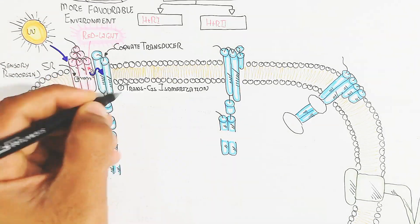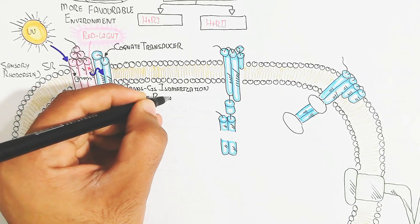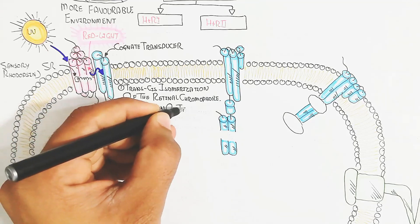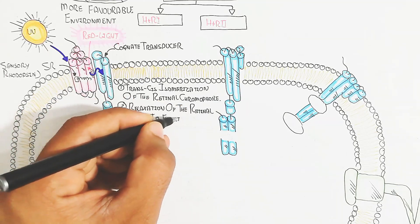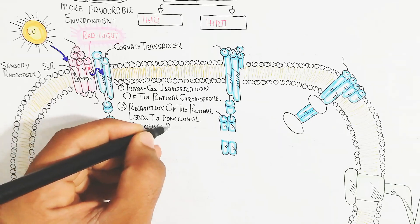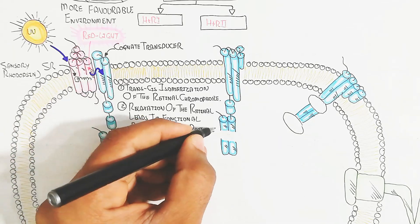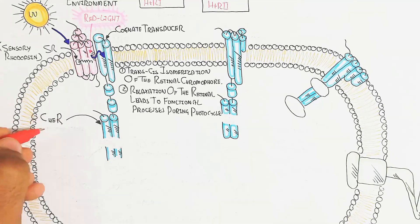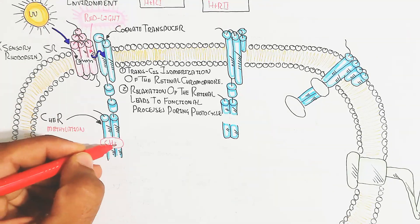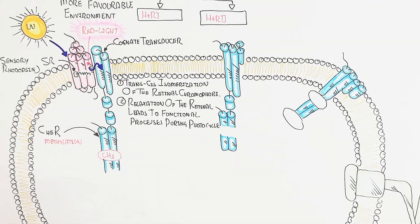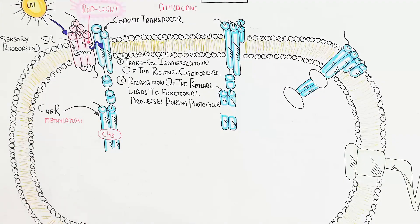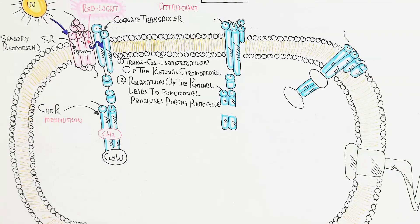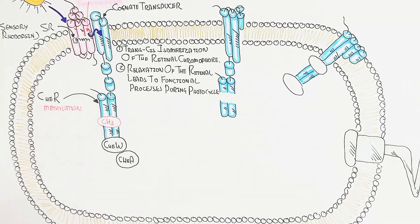Methylation leads to inactivation of the phosphorylation cascade. Key steps include: first, trans and cis isomerization of the retinal chromophore; second, relaxation of the retinal leads to functional processes during the photo cycle. The G-protein complex — when methylated — leads to inactivation.